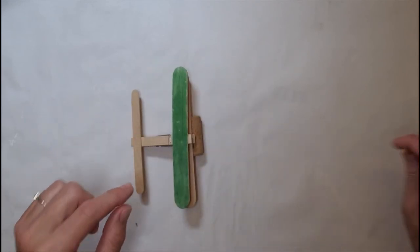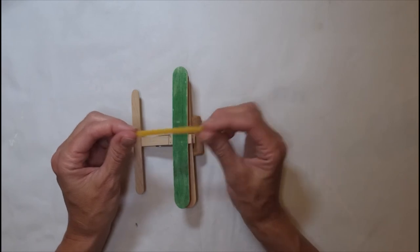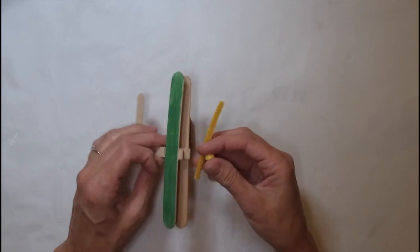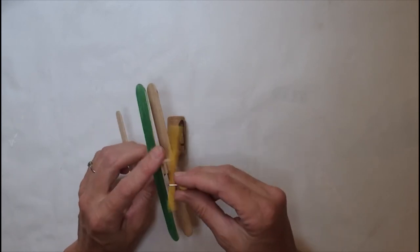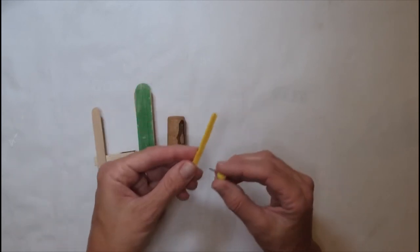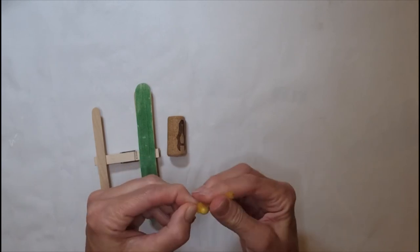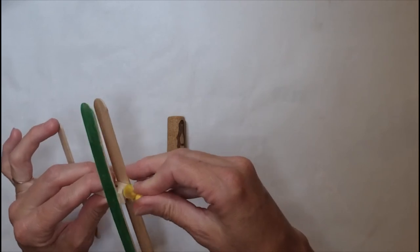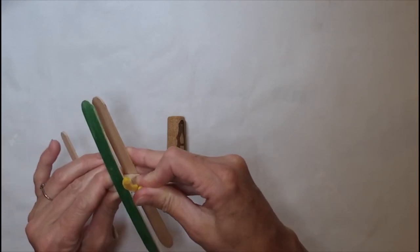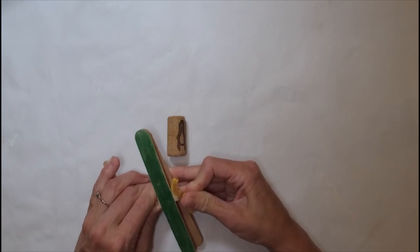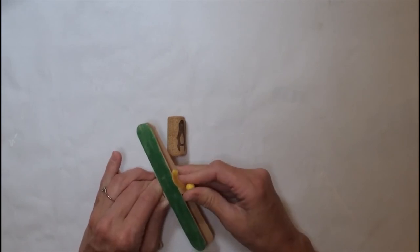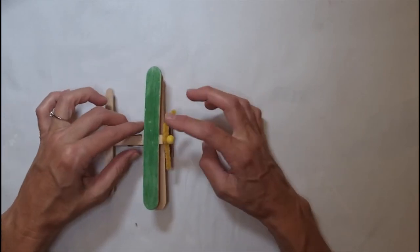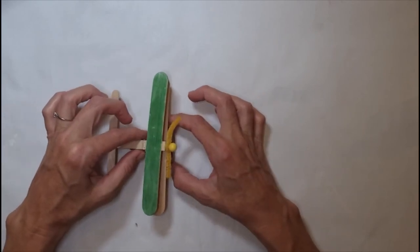And then another thing you could do is if you cut a little pipe cleaner, just a little piece like a propeller, and you have a tack, you could just put this right on the front here, wrap it around the tack. I'm just going to push it into the wood right there in the center, and then you would have a propeller and some landing wheels.